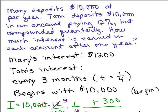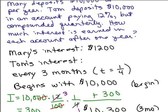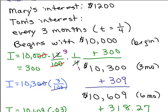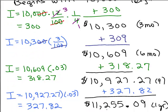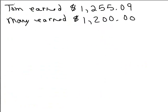It looked like this: his time was one-fourth, he began with $10,000, and we figured out how much interest he earned at the end of every three months. We found that at the end of the year he had $11,255.09 in the account, which told us that his interest was $1,255.09 — that's above the original $10,000 deposit. So Tom earned $1,255.09 in interest after one year when compounded quarterly, whereas Mary earned $1,200. He earned about $55 more over the year because it was compounded quarterly, but it took a lot of computations.